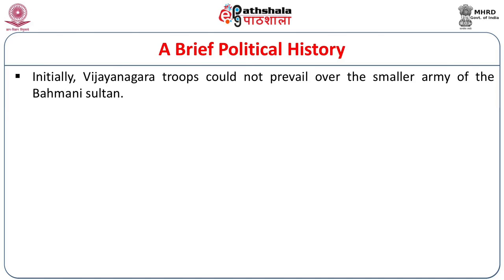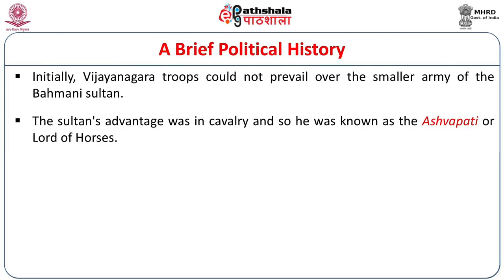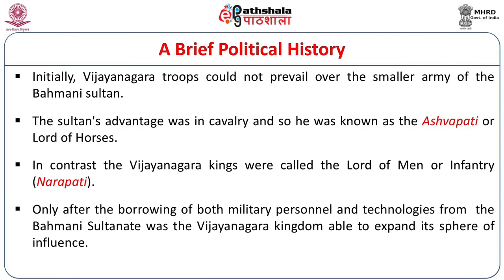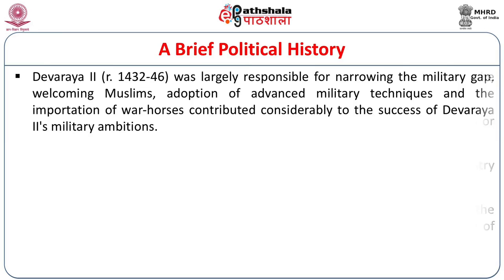Both kingdoms vied for access to this important strategic military commodity. Initially the Vijayanagara troops could not prevail over the smaller army of the Bahmani sultans because of the sultan's advantage of having good quality cavalry. The sultan was known by the epithet Ashwapati, meaning lord of the horses, while Vijayanagara was called Narapati, lord of the men. It was only through borrowing military personnel and technologies from the Bahmani Sultanate that the Vijayanagara kingdom was able to expand its sphere of influence.